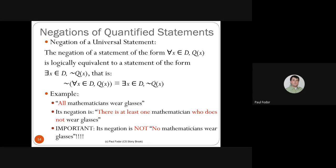For example, 'all mathematicians wear glasses' — its negation is 'there is a mathematician who doesn't wear glasses.' It's important to see that what makes a universal statement false is exactly when the existential statement of the negation is true. When we push negation over a universal quantifier, we get an existential quantifier.